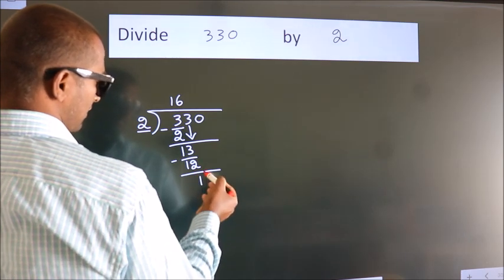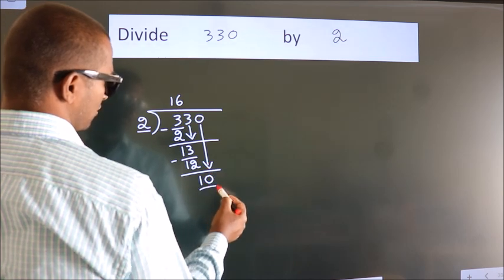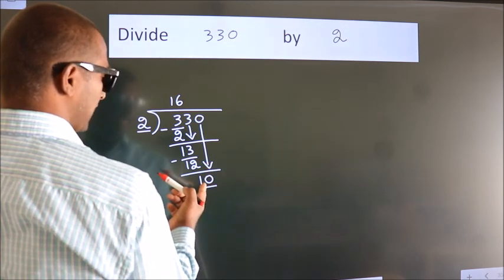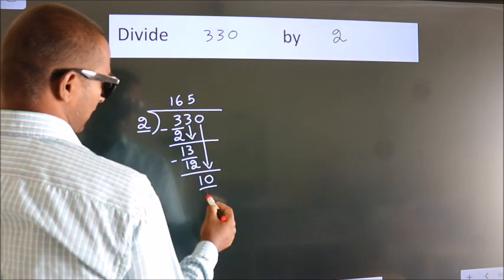After this, bring down the beside number. So, 0 down, making 10. When do we get 10 in 2 table? 2 times 5 is 10.